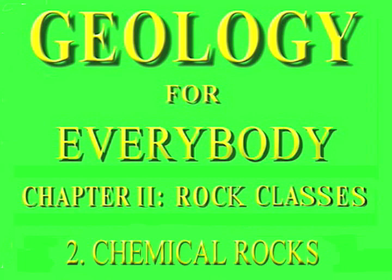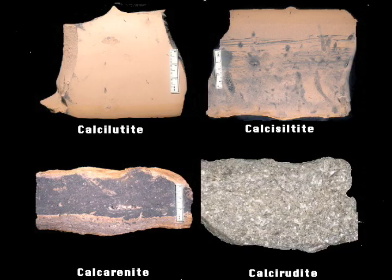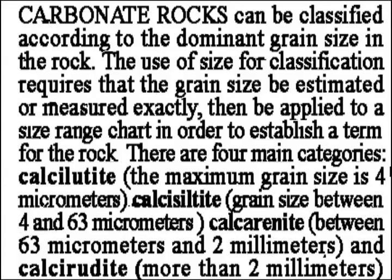As rock-makers, the chemical sediments are just as important as the clastics. Like the clastics, they are named by particle size, but because calcium carbonate is by far the most abundant of the mineral precipitates, clay-sized carbonate particles are called calci-lutite. Lutite is from the Latin ludum, mud. And in the same way, the classifications calci-siltite, calcarenite, and calcirudite are used to name accumulations of silt, sand, and conglomerate-sized particles that form rock.